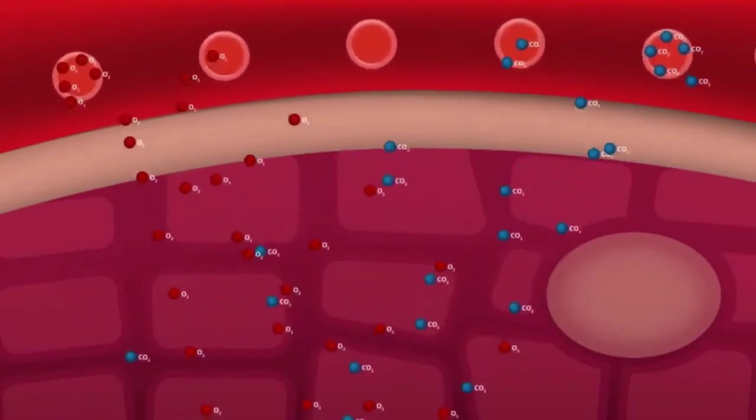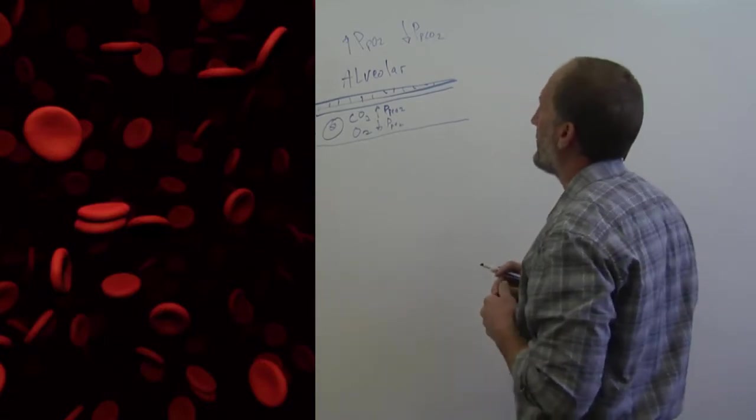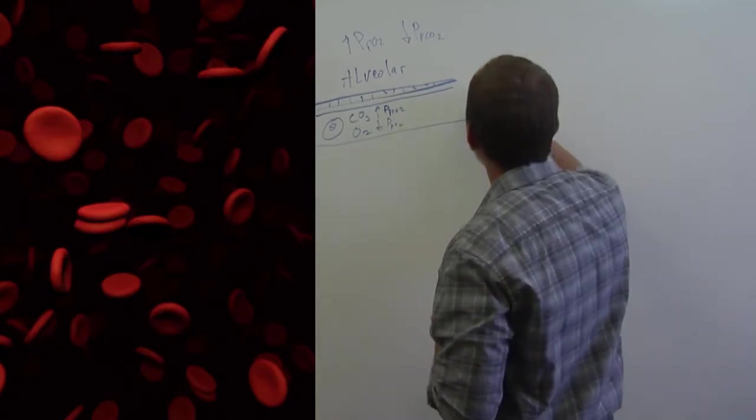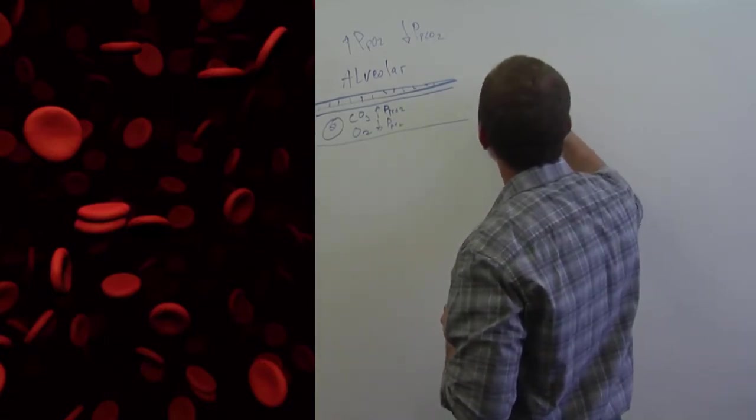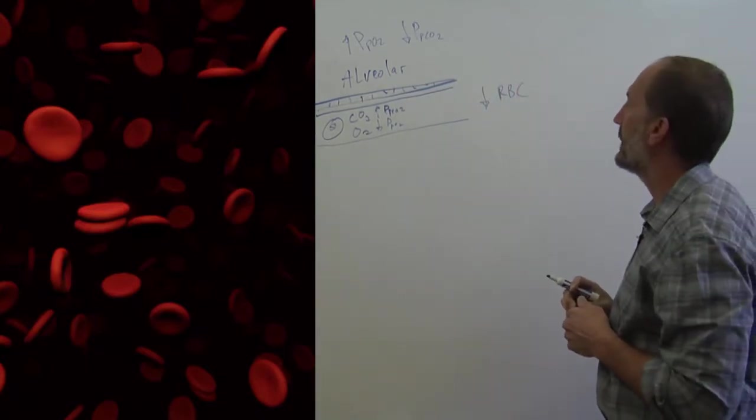So the way this is relevant is patients who have disease, there's several things that can happen. One, they can have less red blood cells. So the ability to pull oxygen out of the lung is decreased.